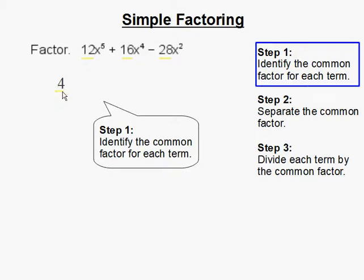So we're going to separate 4 and put that right here. Then we're going to move on to the variable: x to the fifth, x to the fourth, and x to the second. X to the second is the common factor since they all can be divided by x to the second, and I'm going to place that there.